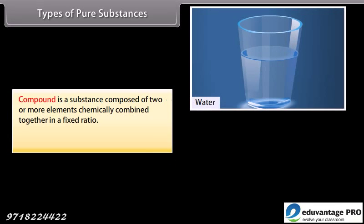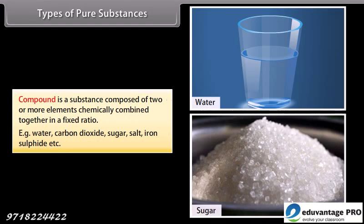Compound is a substance composed of two or more elements chemically combined together in a fixed ratio. For example, water, carbon dioxide, sugar, salt, iron sulphide, etc.